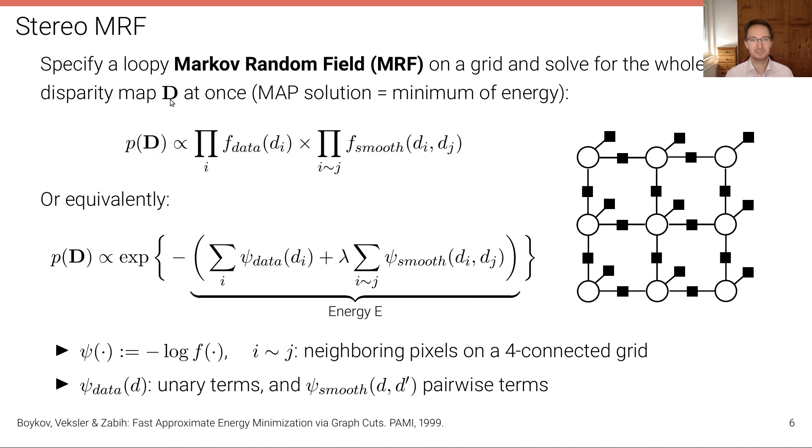So we model a distribution over the space of all disparity maps. Capital bold D is a disparity map that in the case of a VGA image is a 640 by 480 dimensional matrix. And now we want to model the probability distribution over the space of all these matrices. And this probability is proportional to this factorization into unary factors and pairwise factors where this tilde here denotes adjacent sites. For example, this pixel and this pixel are adjacent in this graph structure that we have defined. The unary factors are the data terms that are determined by our local matching cost. And that depends only on a single variable. And the pairwise factors are the smoothness factors or the prior constraints about the smoothness of the disparity maps that we want to integrate into this problem.